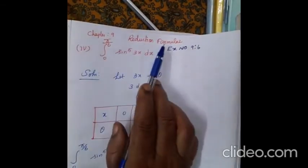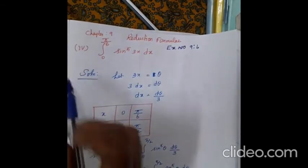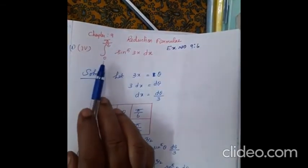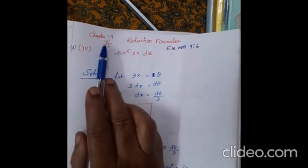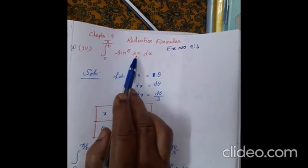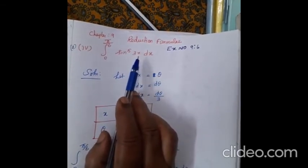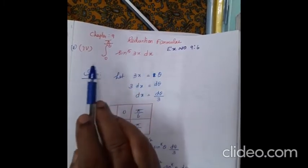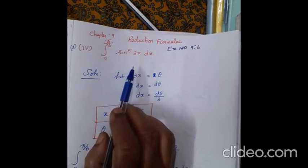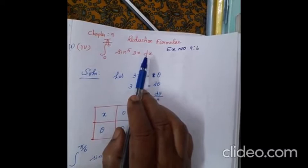Now, same chapter 9 reduction formula, exercise number 9.6. For the first part, fourth subdivision: the integral from 0 to π/6 of sin⁵(3x) dx. The last sum we explained was sin³(x); the third sum was sin⁶(2x). Here we have sin⁵(3x) dx. We apply the same method using the substitution method.